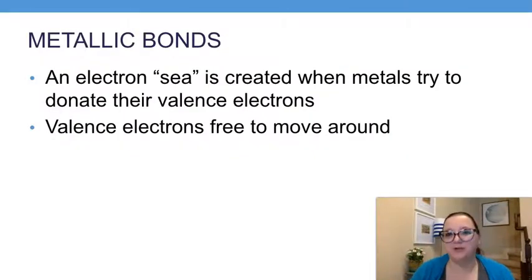Metallic bonds is our third type. What's interesting about metallic bonds is that we actually see these when we have pure elements, which is very unusual. What happens with a metallic bond is that an electron sea is created when metals try to donate their valence electrons. Metals love to lose their electrons. Sometimes they try to give those away even if there's really nothing there to take them, so we end up with this surrounding electrons around our metals, and those valence electrons are free to move around.